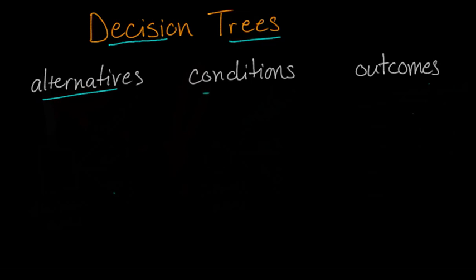The conditions. These are the various states of nature, the things that are uncertain. And outcomes — these are the consequences of the combination of certain alternative decisions that we make and the conditions.